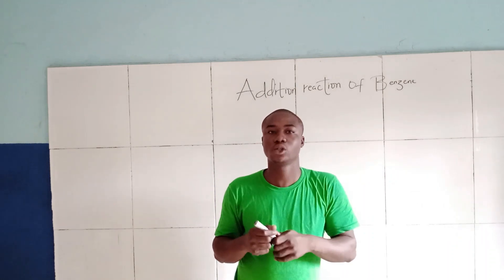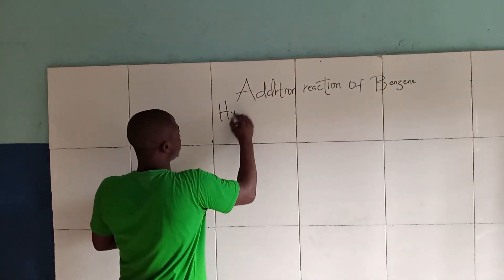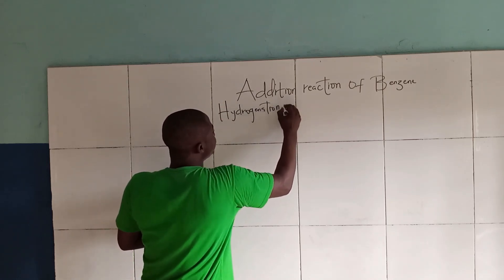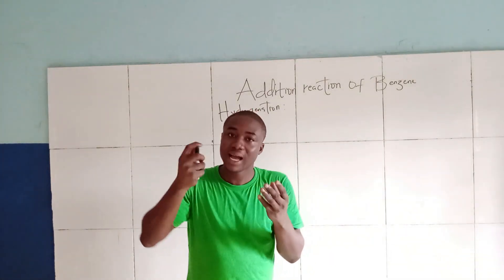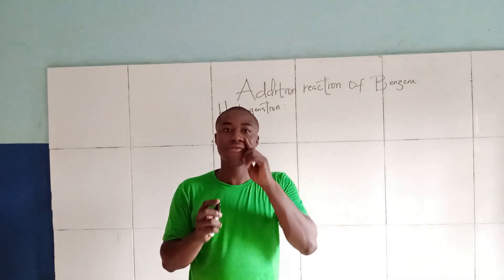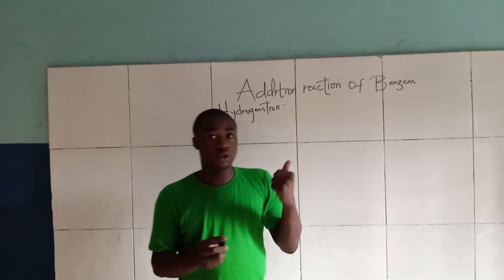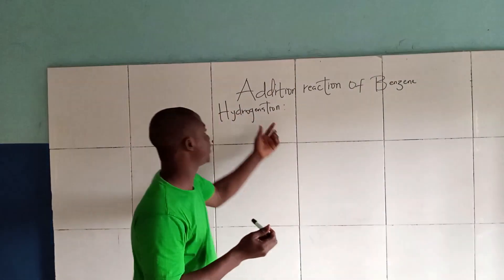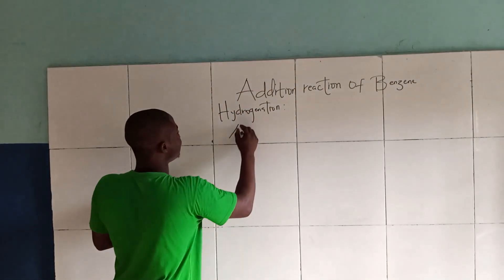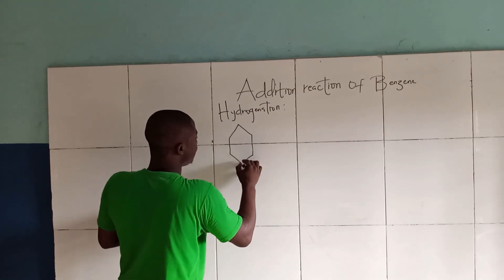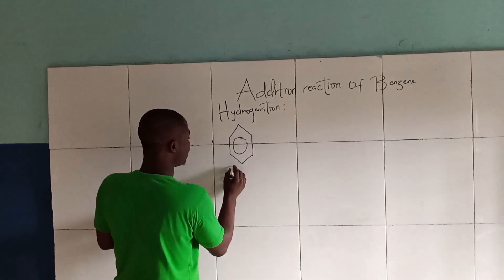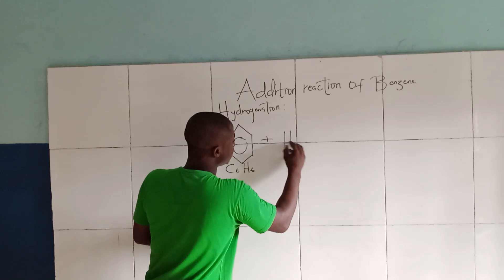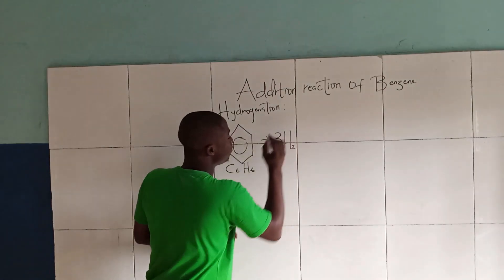Let's talk about Hydrogenation of Benzene. Hydrogenation of Benzene requires you to react Benzene with Hydrogen. During Addition Reaction of Benzene, three moles of the addendum should be required. This is Benzene, which is C₆H₆, reacting with the addendum — Hydrogen — and it should be three moles.